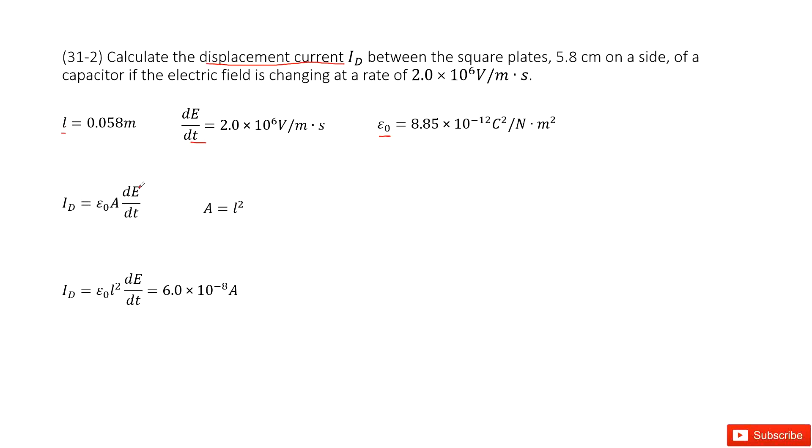Electric field changing rate we write as dE/dt. Now we input A in this equation: ID = ε₀A(dE/dt) = 6.0 × 10⁻⁸A. We get the displacement current. Input all the given quantities, you get the answer. Thank you.